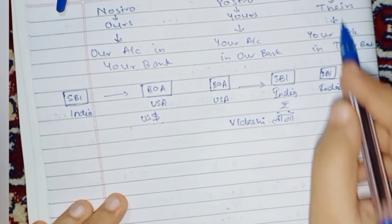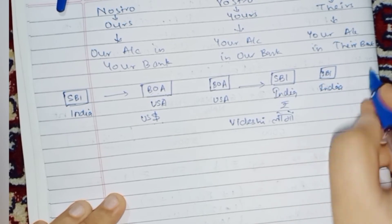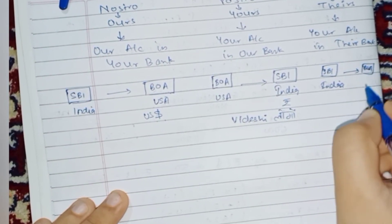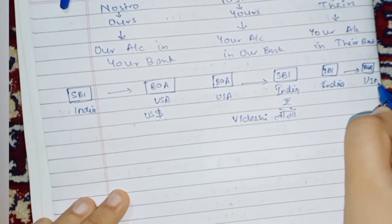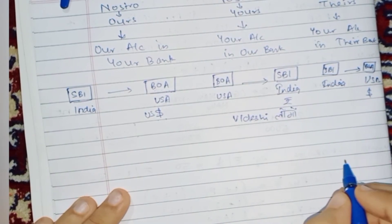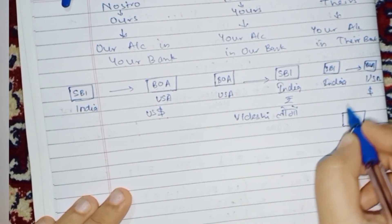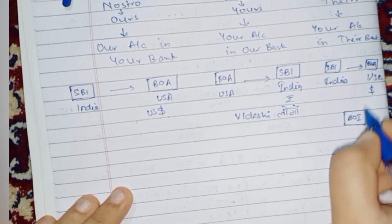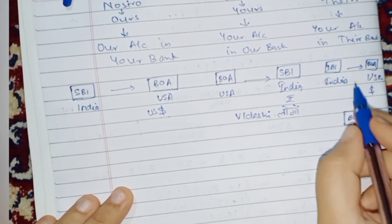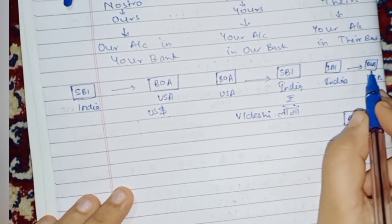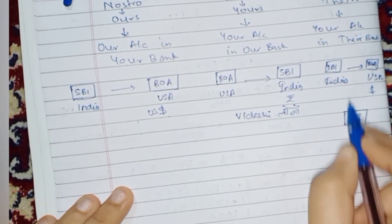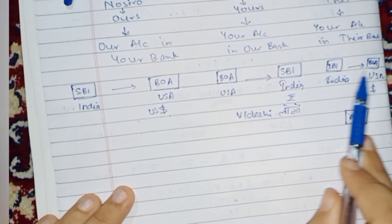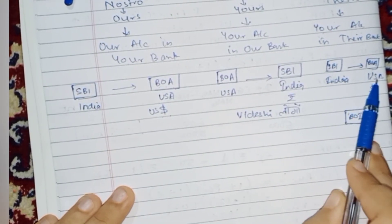An example of a Loro account: SBI of India is opening a bank account in Bank of America, USA in US dollar currency. Then another bank in India — let us say Bank of India — for Bank of India, this account of SBI will be regarded as a Loro account, because it is your account in their bank.